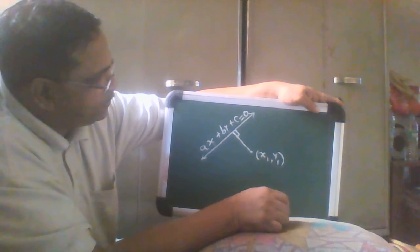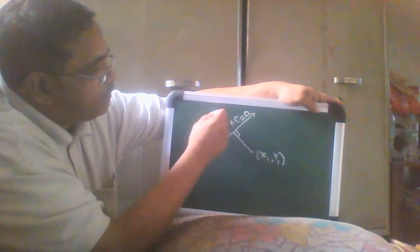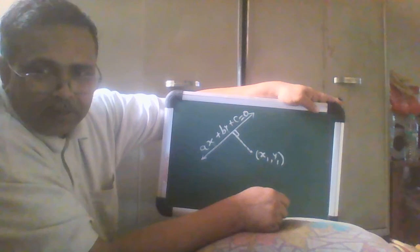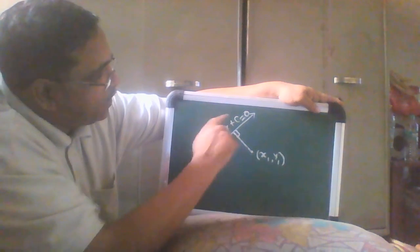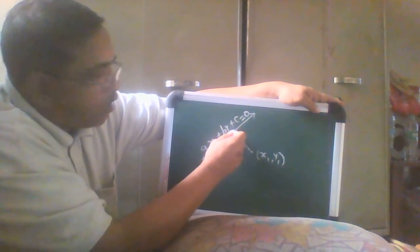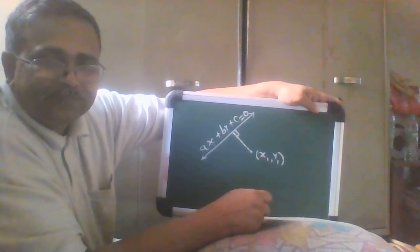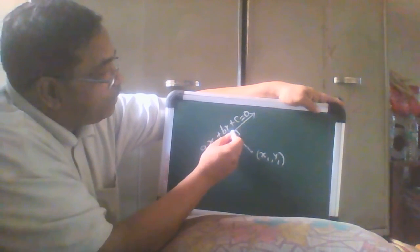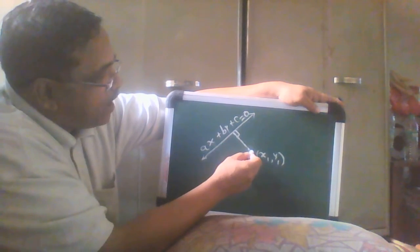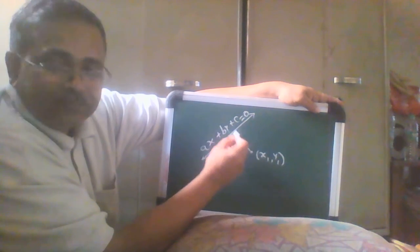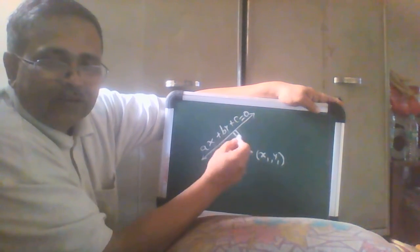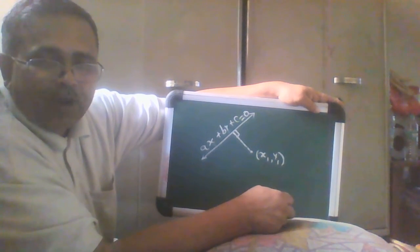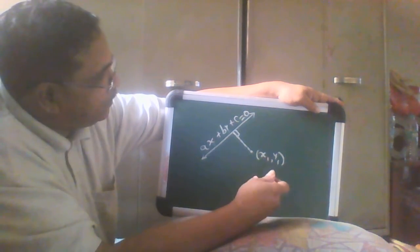There can be various approaches but simplest approach is: find out equation of this line first, then solve two simultaneous equations and get coordinates of this point, and then use distance formula and find out distance between these two points and that is what is required.